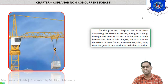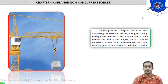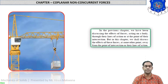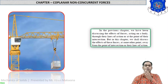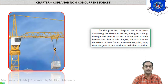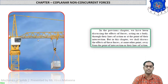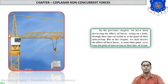In this chapter we shall discuss the effect of these forces at some other point away from the point of intersection of their lines of action. As you can see in the figure, this weight creates a clockwise movement about the vertical line of action of the body. So moment is equal to force into perpendicular distance.